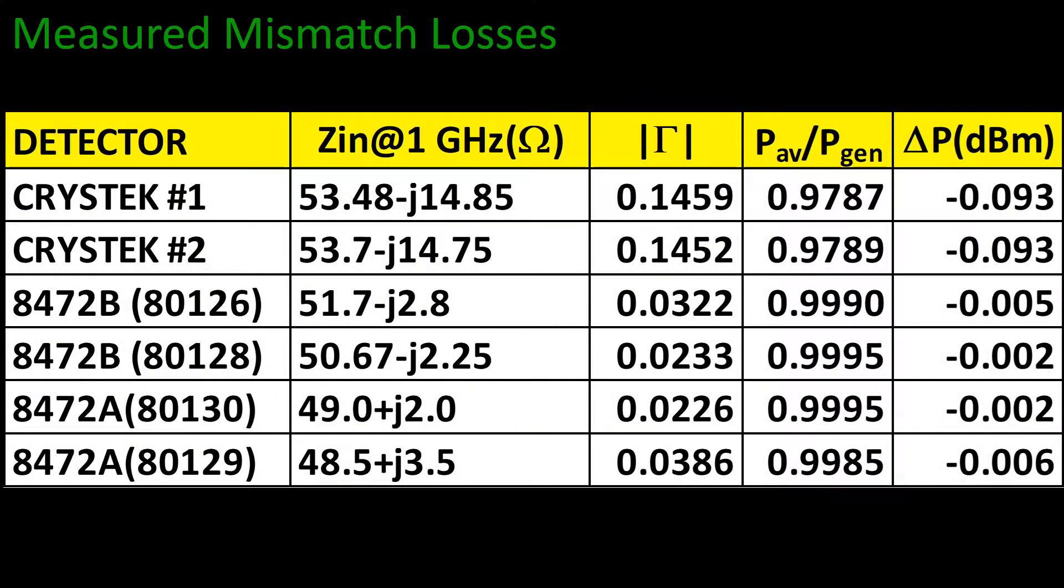It is important to make sure that the detectors are properly matched. This table shows the impedances we measured at 1 GHz with a vector network analyzer. We can observe that all devices are very well matched. Therefore, we will ignore the power losses due to reflections.